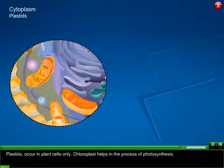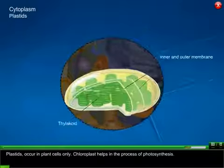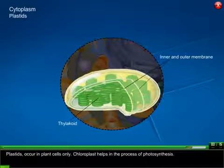Plastids: Occur in plant cells only. Chloroplast helps in the process of photosynthesis.